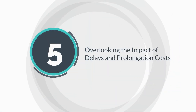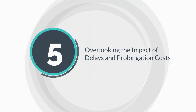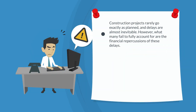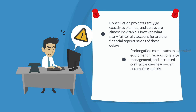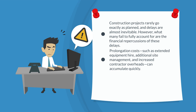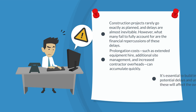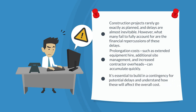Mistake five: overlooking the impact of delays and prolongation costs. Construction projects rarely go exactly as planned, and delays are almost inevitable. However, what many fail to fully account for are the financial repercussions of these delays. Prolongation costs — such as extended equipment hire, additional site management, and increased contractor overheads — can accumulate quickly. If these costs aren't factored into the forecast, the project can easily exceed its budget. It's essential to build in a contingency for potential delays and understand how these will affect the overall cost.